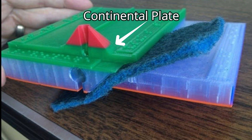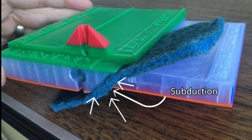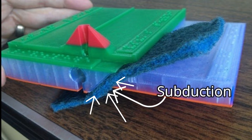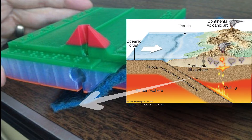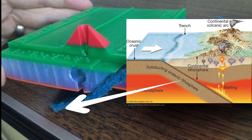Subduction is the process by which a plate dives under the less dense plate. At the mantle, the leading edge of the subducting plate melts or becomes fluid. It turns into a hot molten material which we call magma.